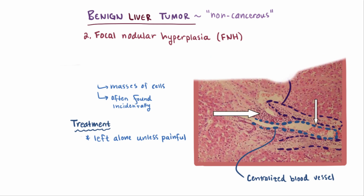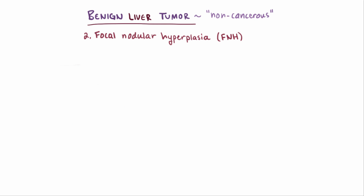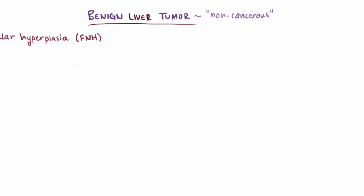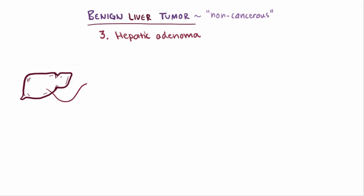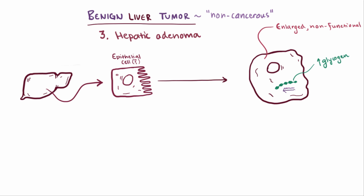Another type of benign hepatocyte tumor, and one that's a lot more rare, is a hepatic adenoma. These are tumors thought to be made up of liver epithelial cells, and often develop in an otherwise healthy liver. Usually these hepatocytes are enlarged, non-functional, and contain more glycogen and lipids than normal.